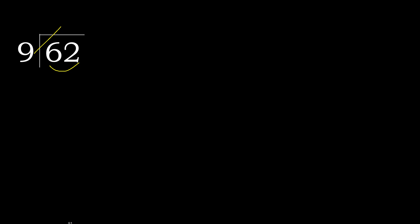But not greater. 9 multiplied by 7 is 63, which is greater. Multiplied by 6 is 54, which is not greater. Subtract — the result is 8.